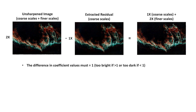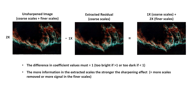Then we subtract those extracted residuals from the unsharpened image and multiply each by coefficients. Notice: two times the unsharpened minus one times the extracted residual equals a sharpened image. The key rule is that the difference in those coefficients must always equal one — it could be four minus three, or two minus one, or whatever — so the brightness is preserved. The math works out: two times coarse scales plus two times finer scales, minus one times coarse scales, equals one times coarse scales plus two times finer scales. Sharpening occurs because we've increased the finer scales by the coefficient used for the unsharpened image.